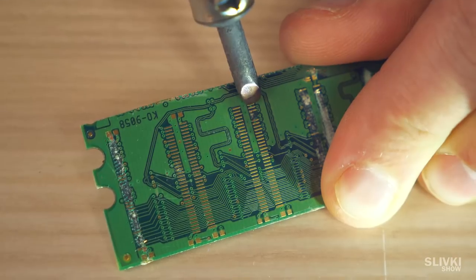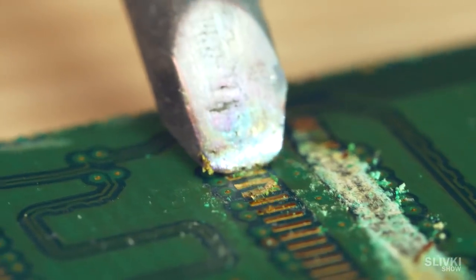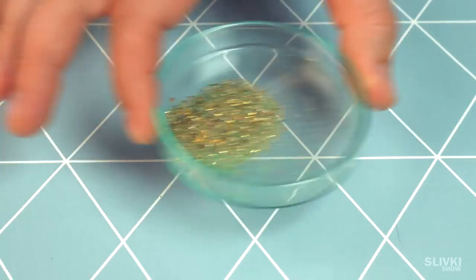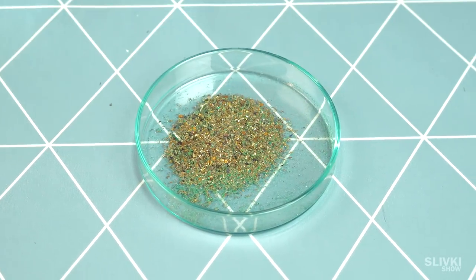Meanwhile, we got a blowtorch and using it separated gilded contacts with other sides of our RAM. Only a little, so it won't go waste.